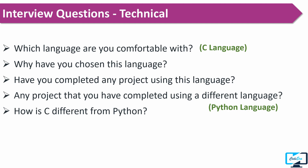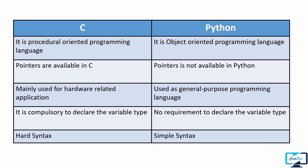The next question was how is C different from Python. You can say C is a procedure-oriented programming language while Python is an object-oriented programming language. In C, pointers are available while pointers are not available in Python. You can mention 3 or 4 such points in your answer.